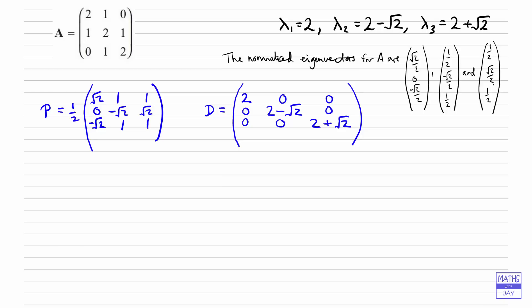If you want to check, let's write down what you would do. So you would write down P to the T times A times P. I think it's a good idea to leave this half outside for P. So of course it will come outside for P to the T as well. So a half times a half would be a quarter.